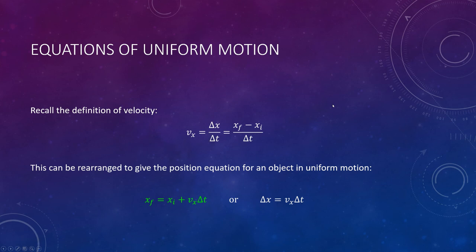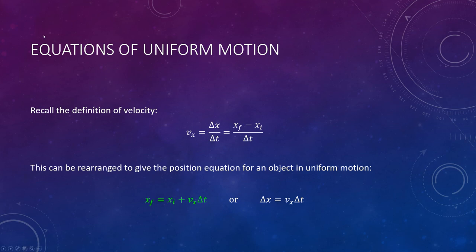Let's take that equation and rearrange it to yield a new equation for position. Multiply delta t over to vx, then add x initial. That leaves us with our position equation: x final equals x initial plus vx times delta t. Or, keeping x initial on the left-hand side: delta x equals vx times delta t.